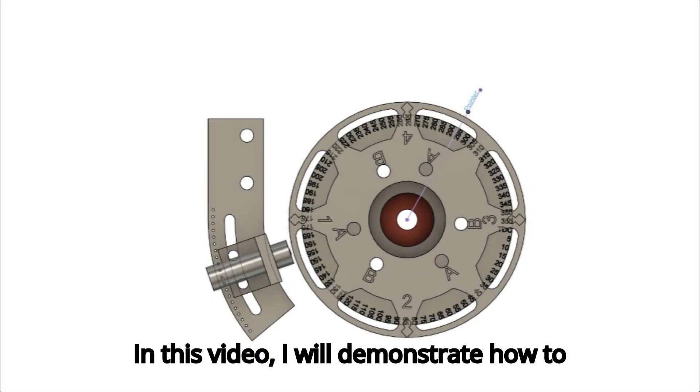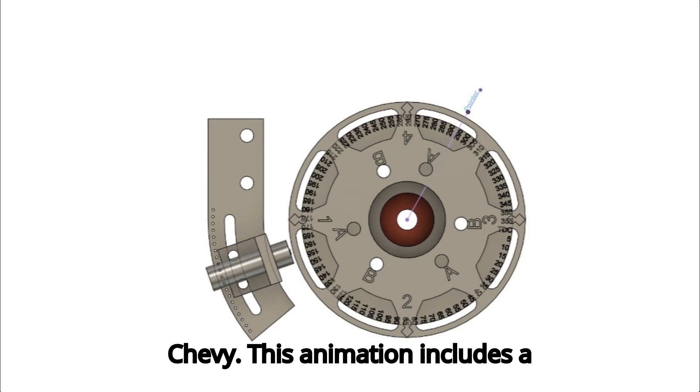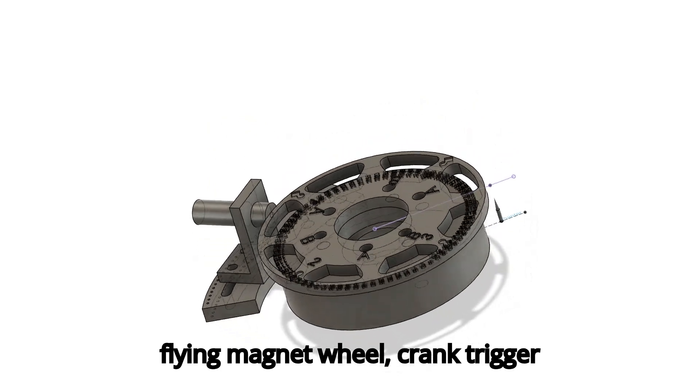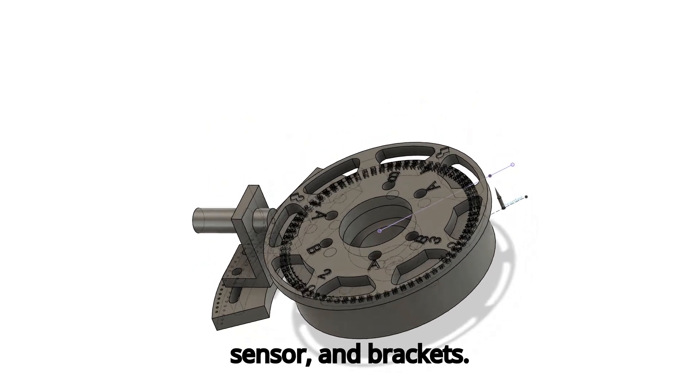In this video, I will demonstrate how to install an MSD crank trigger kit for a Chevy. This animation includes a harmonic balancer, timing pointer, flying magnet wheel, crank trigger sensor, and brackets.